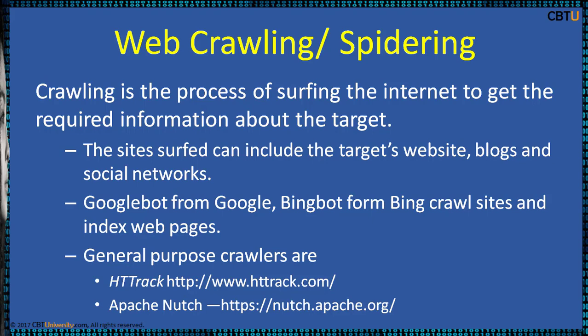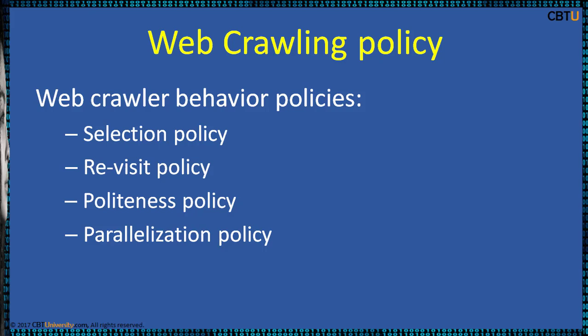Webcrawling policy should not annoy the target and should follow specific behavior policies. These include: Selection policy, which states which pages to download; Revisit policy, which checks for changes to the pages; Politeness policy, which is to avoid overloading websites since crawlers consume resources on the remote server and can impact website performance; and Parallelization policy, which governs how to coordinate distributed web crawlers.